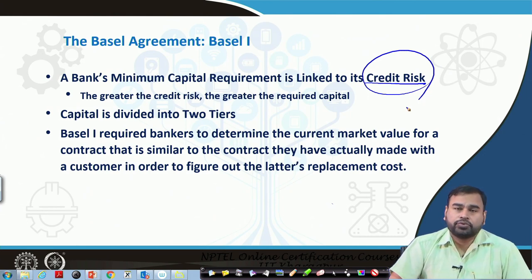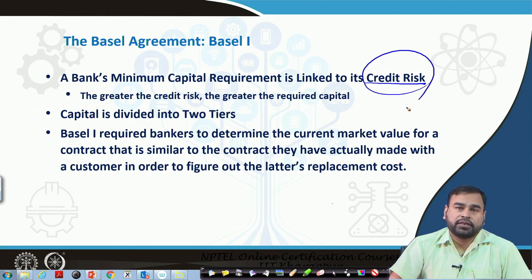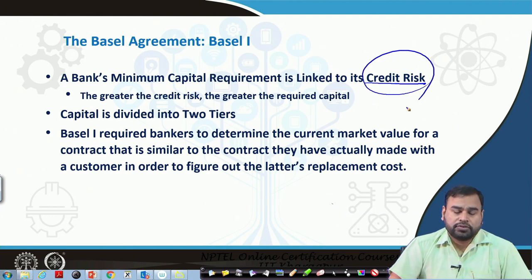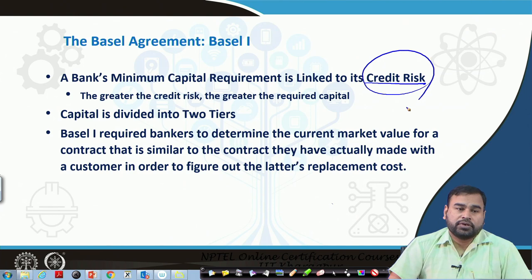In this case, capital is divided into two types: tier 1 capital and tier 2 capital. Basel also required banks to always determine the current market value for a contract similar to the one made with a customer, in order to figure out the latter's replacement cost. The replacement cost plays a role particularly for off-balance sheet items and other items the banks are holding.